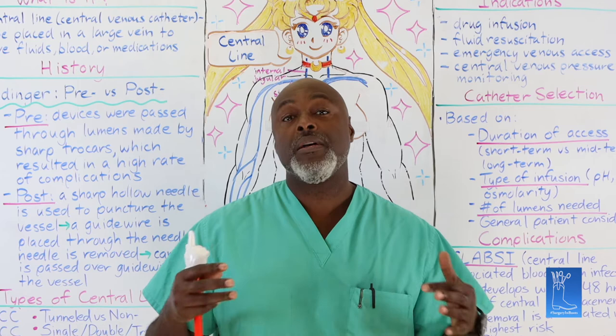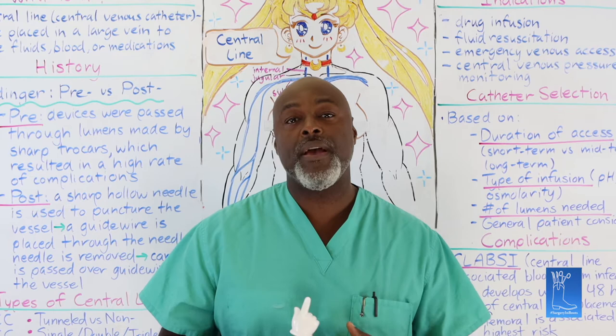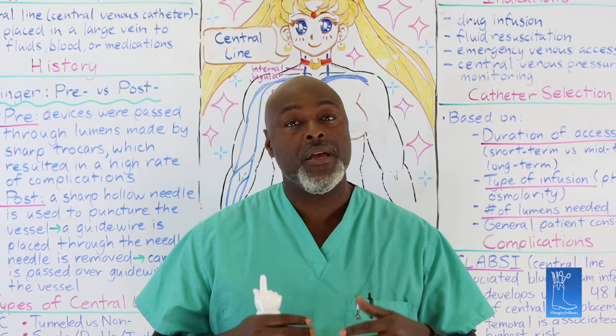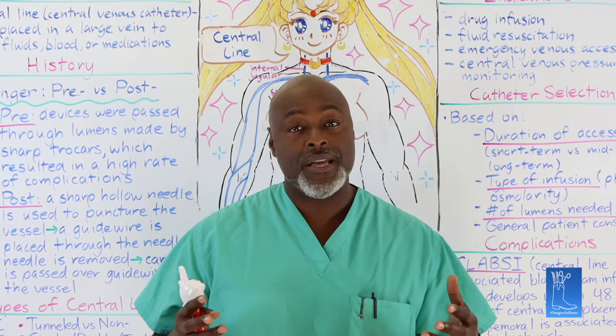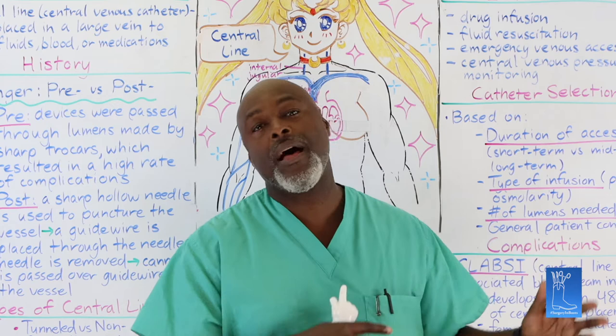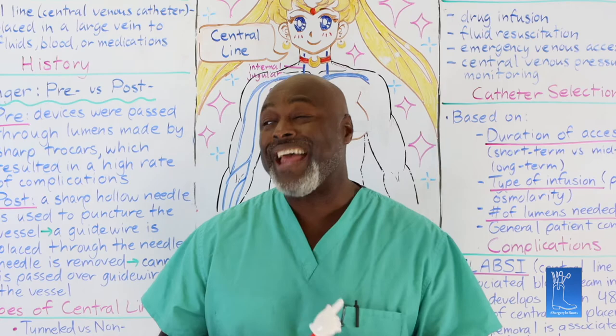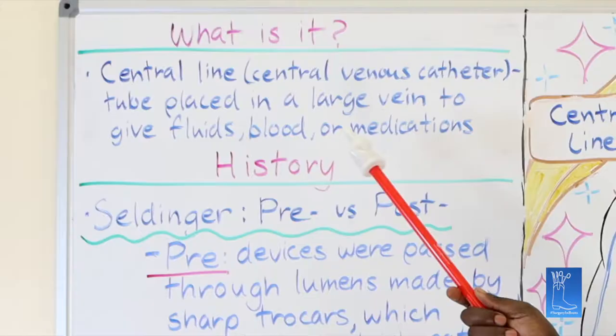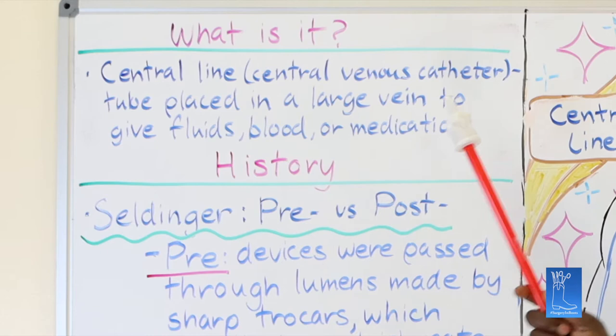Peripheral IVs are also better than central access for CT scans and MRIs. You have to have what's called a power port or something that can be power-injected if you're going to do contrast-injected studies. Peripheral IVs, because they're shorter, can tolerate a little more pressure versus a long one. But from a central line standpoint, it really just means one thing: it's placed in a large vein to give fluids, blood, and medications.